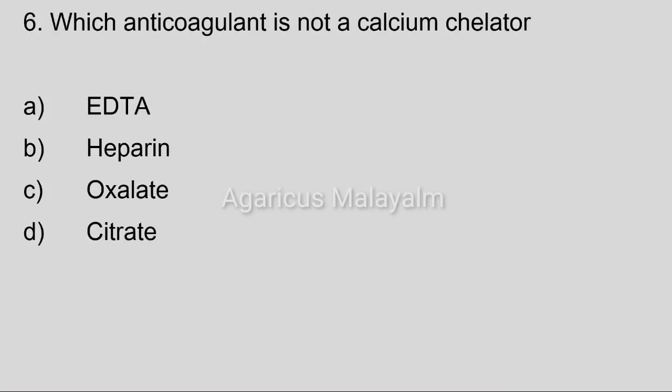Sixth question: Which anticoagulant is not a calcium chelator? Option A: EDTA, Option B: heparin, Option C: oxalate, Option D: citrate. Correct answer: Option B, heparin.